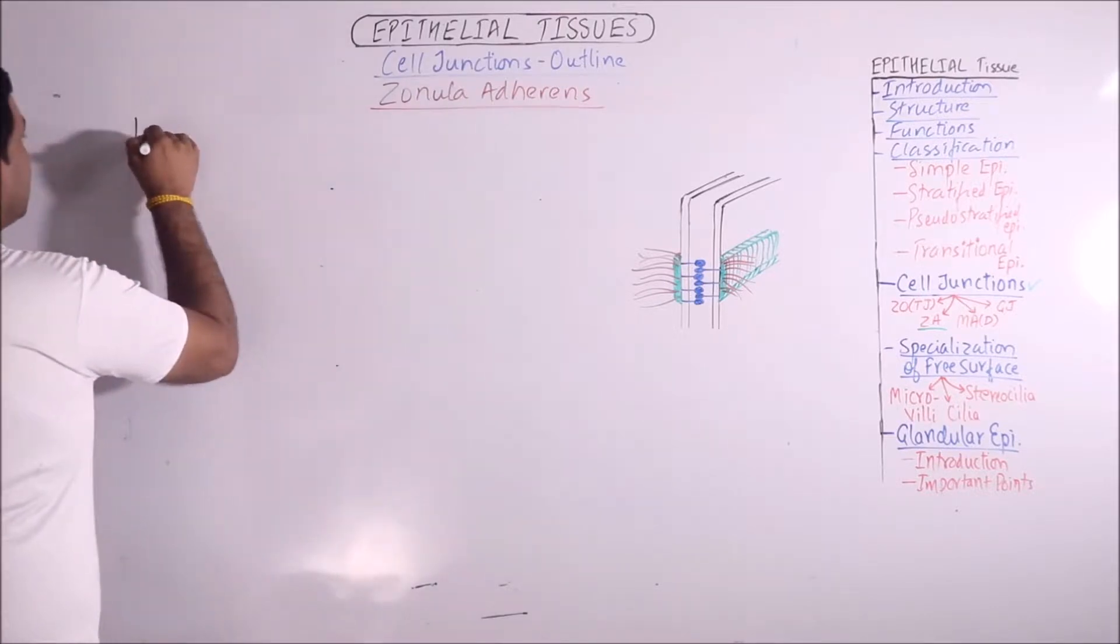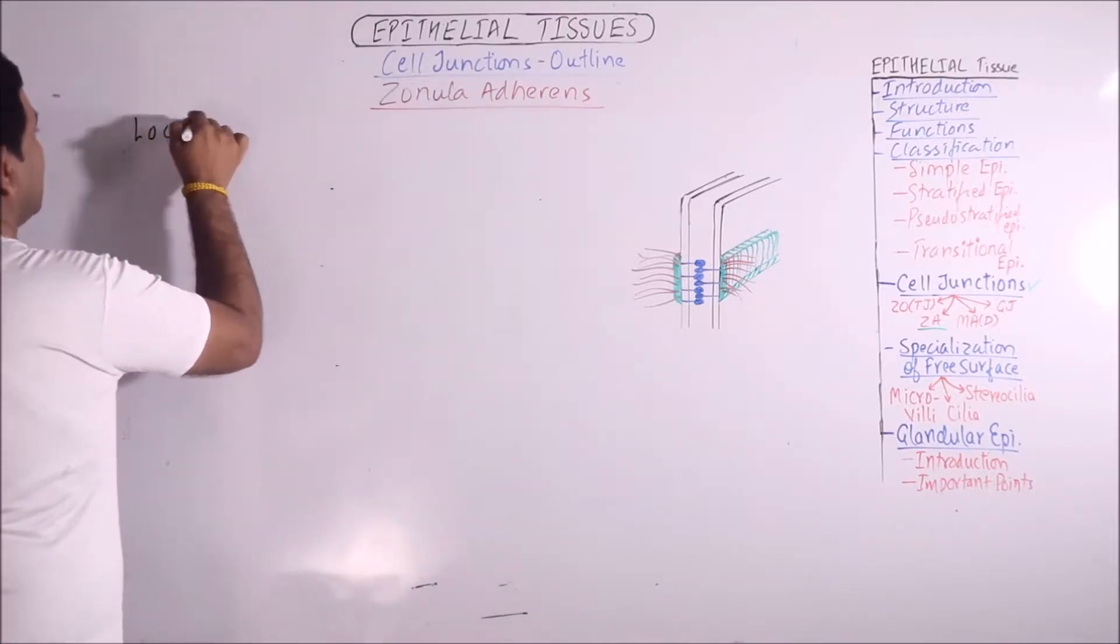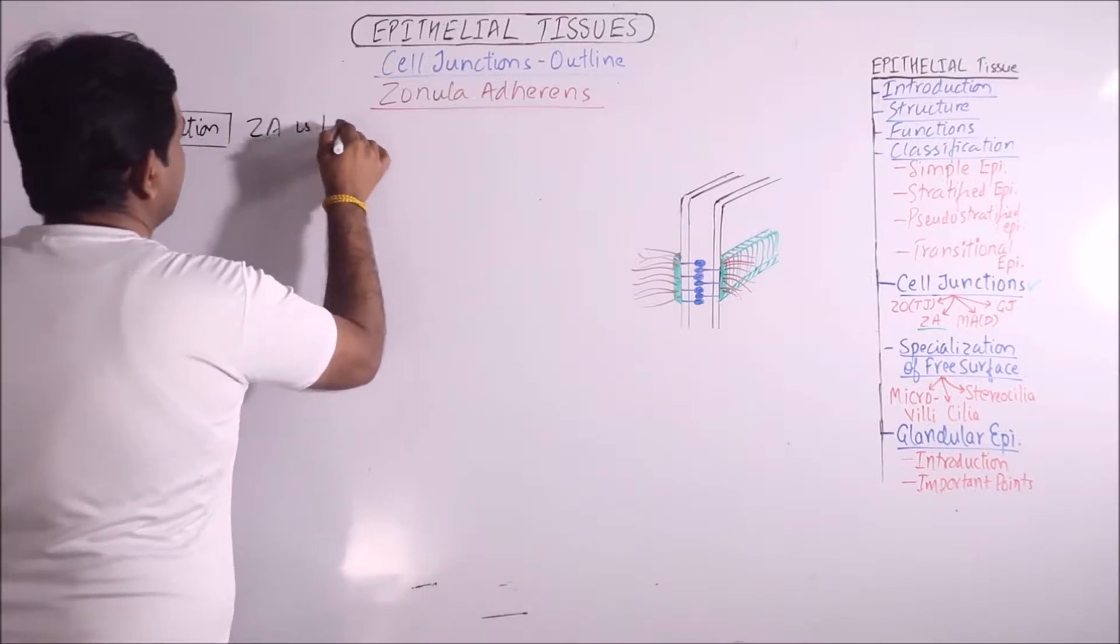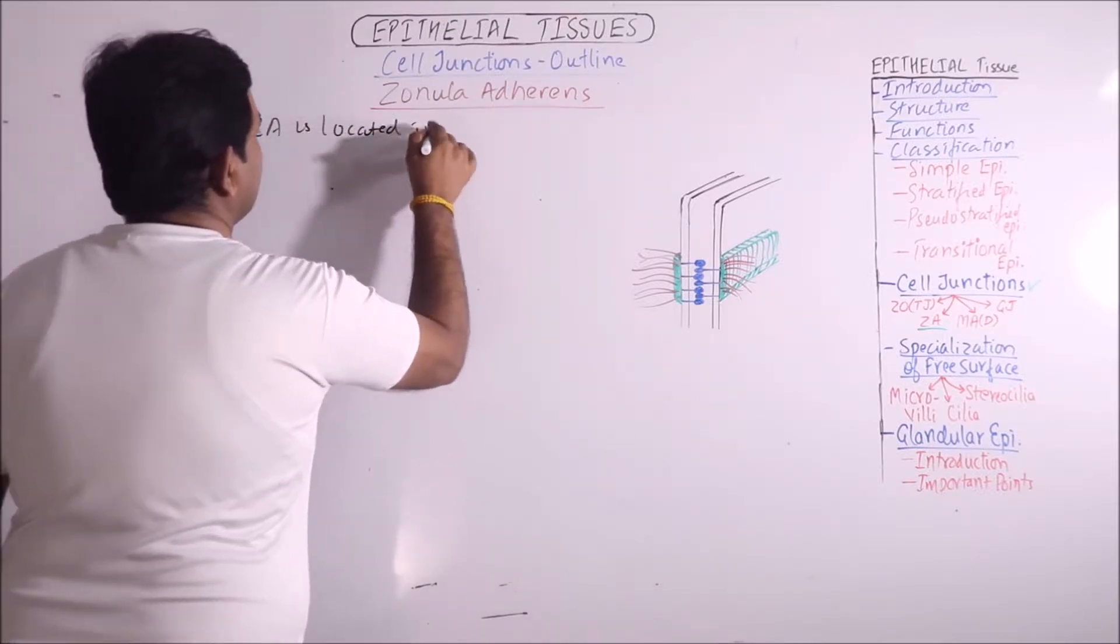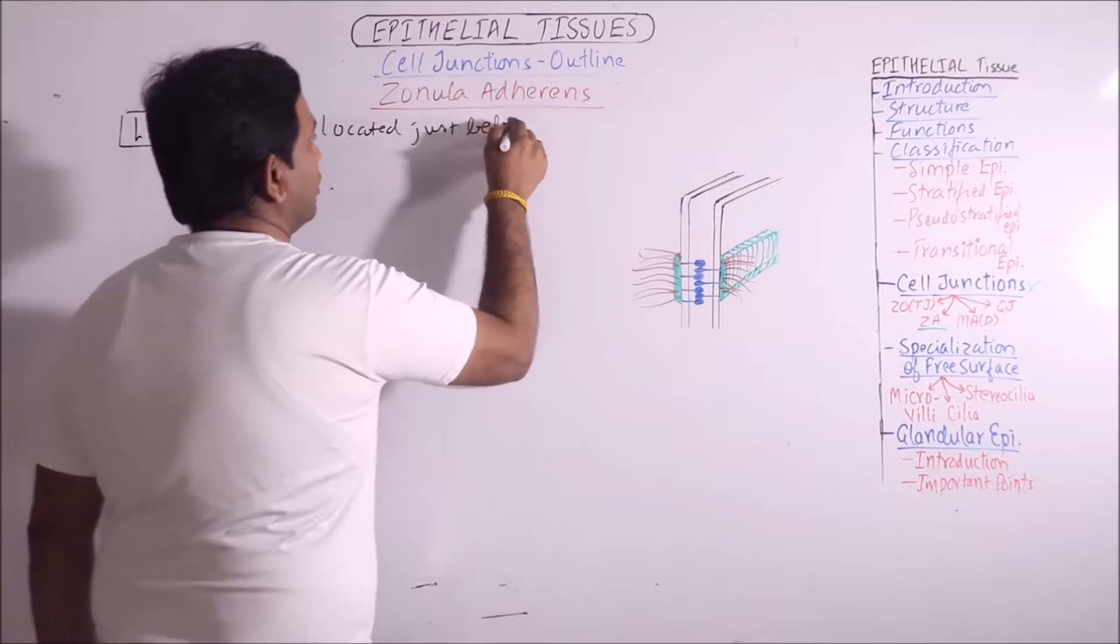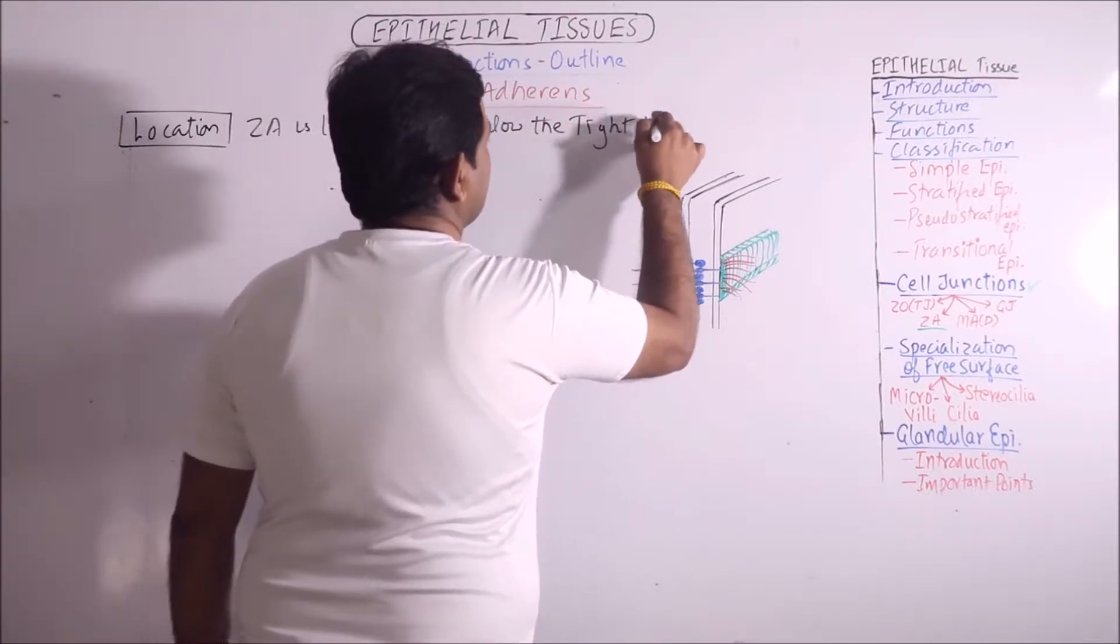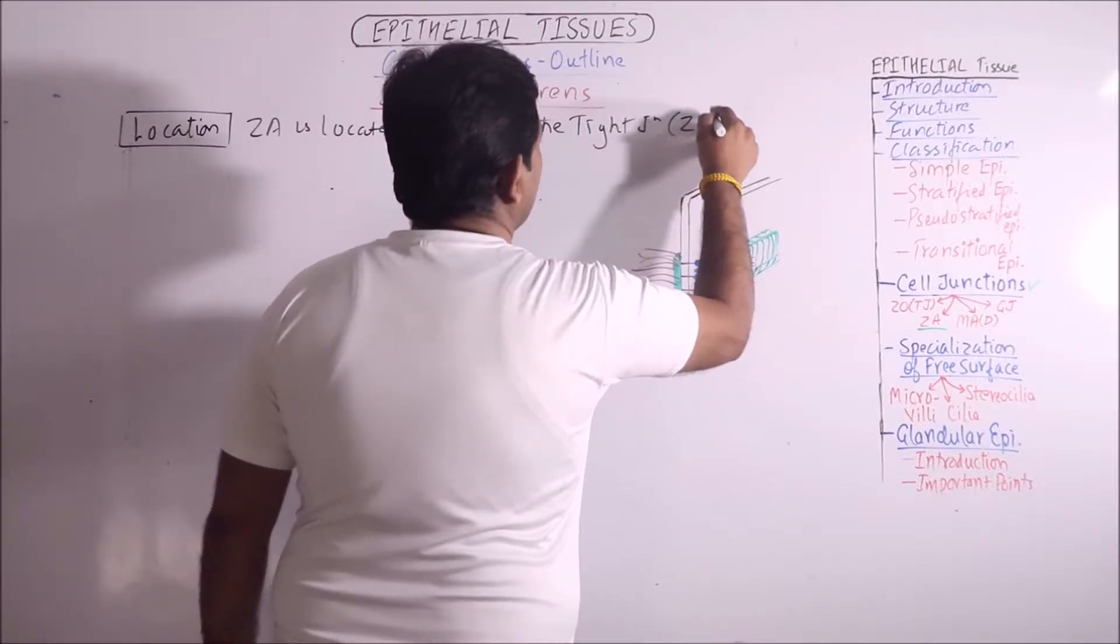First of all, location. Zonula adherence is located just below the tight junctions that is zonula occludens. It means that these are also located in the apical region of the cell.